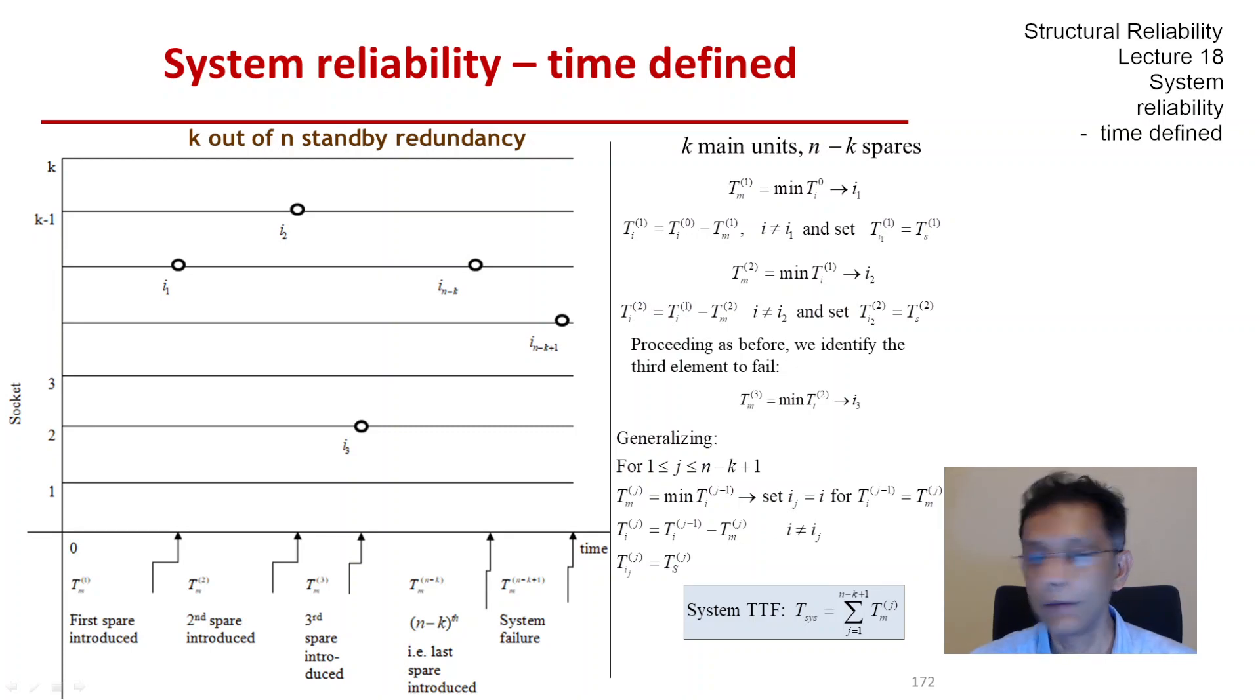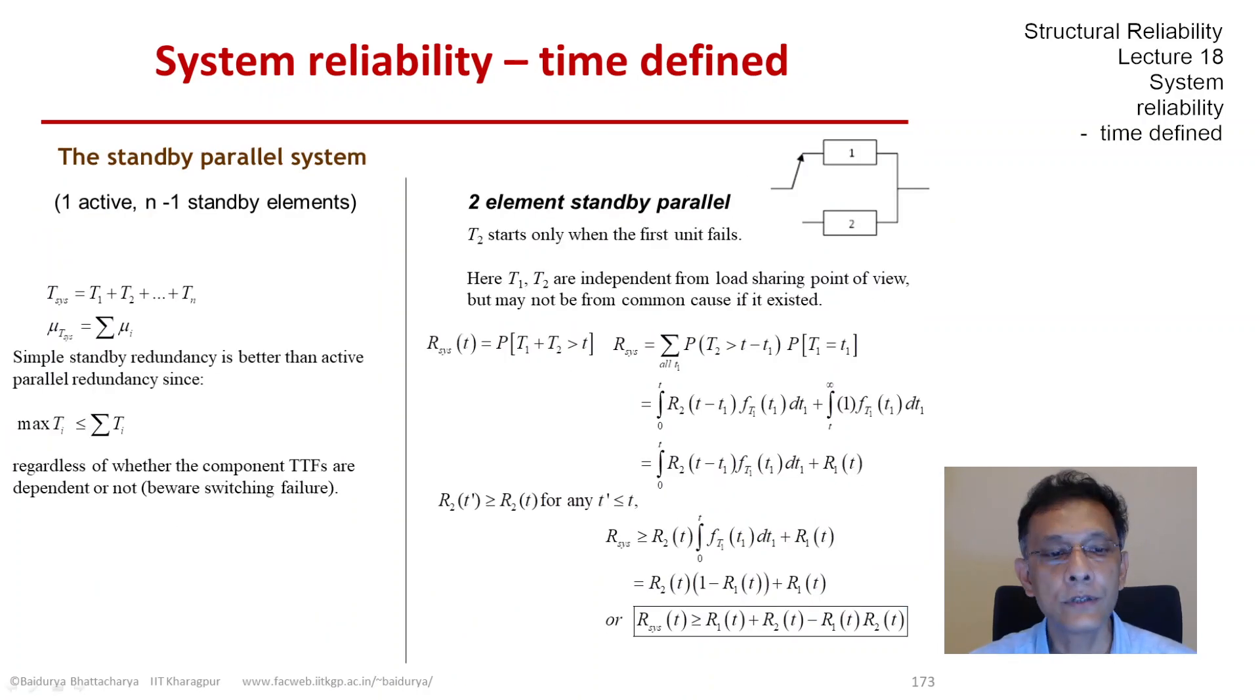Let's look at a very simple standby parallel system with one active and n minus one standby elements. The system time to failure is simply the sum of all individual times to failure, because once the first fails, the second takes over. Whether the TTFs are dependent or not doesn't matter—the mean is the sum of the means. The MTTF for the system is the sum of the individual MTTFs.